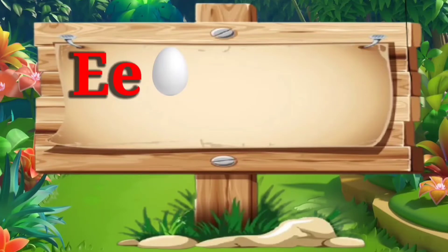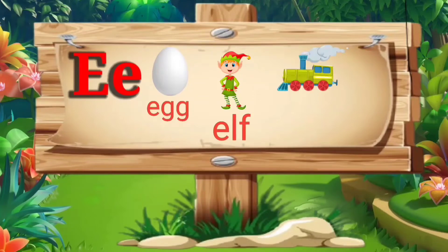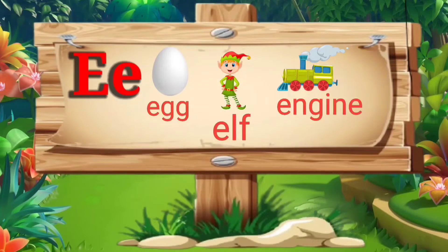E. E for egg: E, double G — egg. E for elf: E, L, F — elf. E for engine: E, N, G, I, N, E — engine.